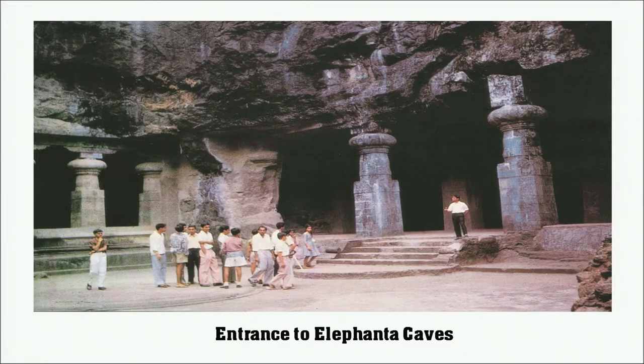In Elephanta caves, the earliest sculptures were Buddhist and then later on we find the Maheshamurti — the three forms of Shiva, sometimes also known as Trimurti. Beyond western, northern and southern India, in eastern India we find that present-day Odisha was also a center of Buddhist activity during this period, with caves and built structures.